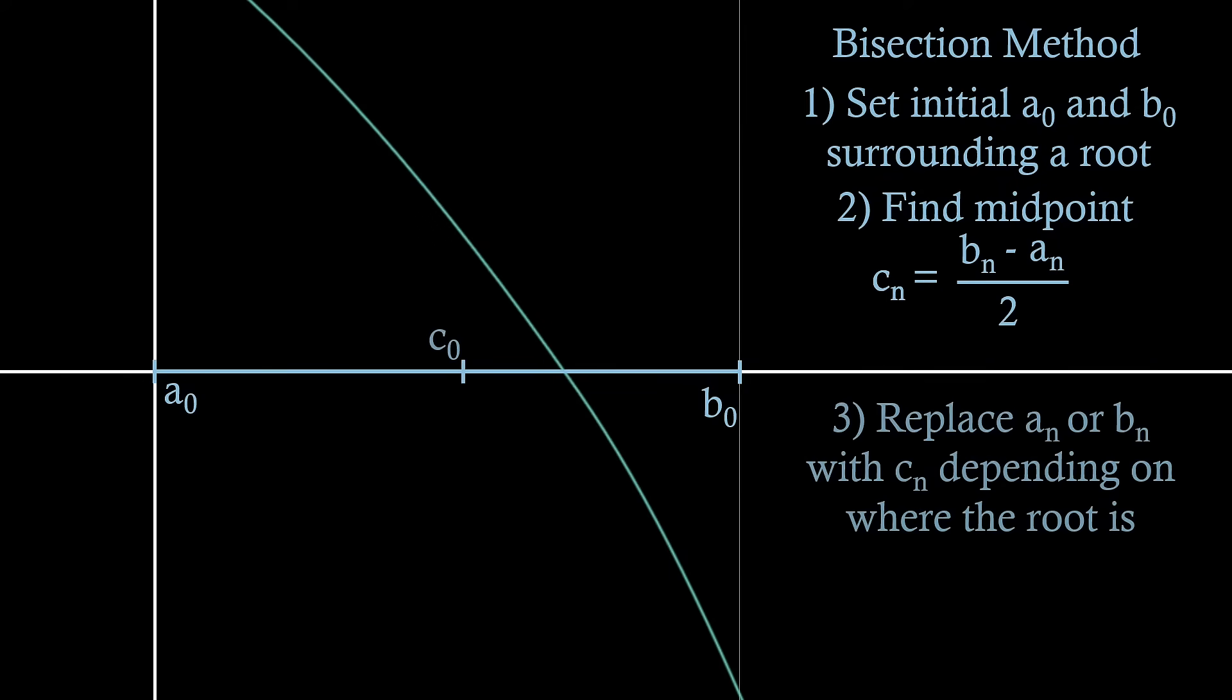If the root sits to the right of cn, we just move an to where cn has just been, or alternatively, if it sits to the left, we just move bn to where cn has just been. We then iterate this process a certain amount of times, or up to a specified tolerance, where we are happy with the accuracy of our estimated bracket.